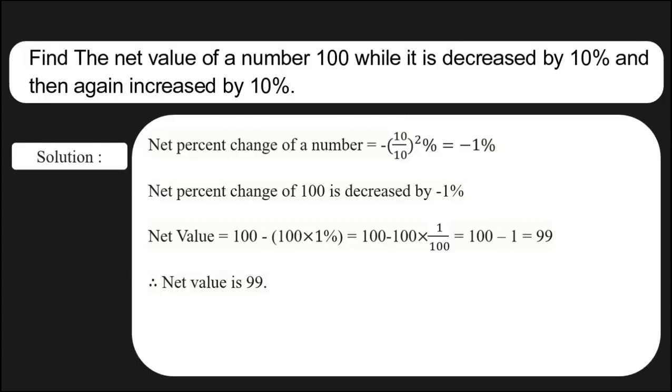So 99 is the net value of the given number 100 while it is decreased by 10% and then again increased by 10%.